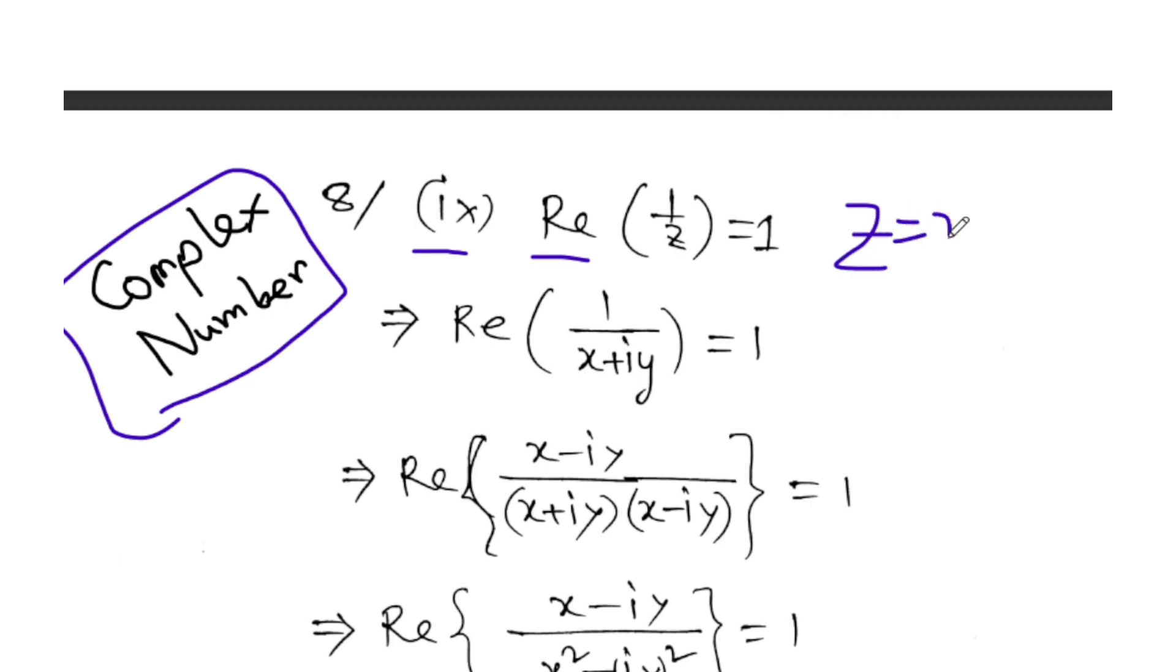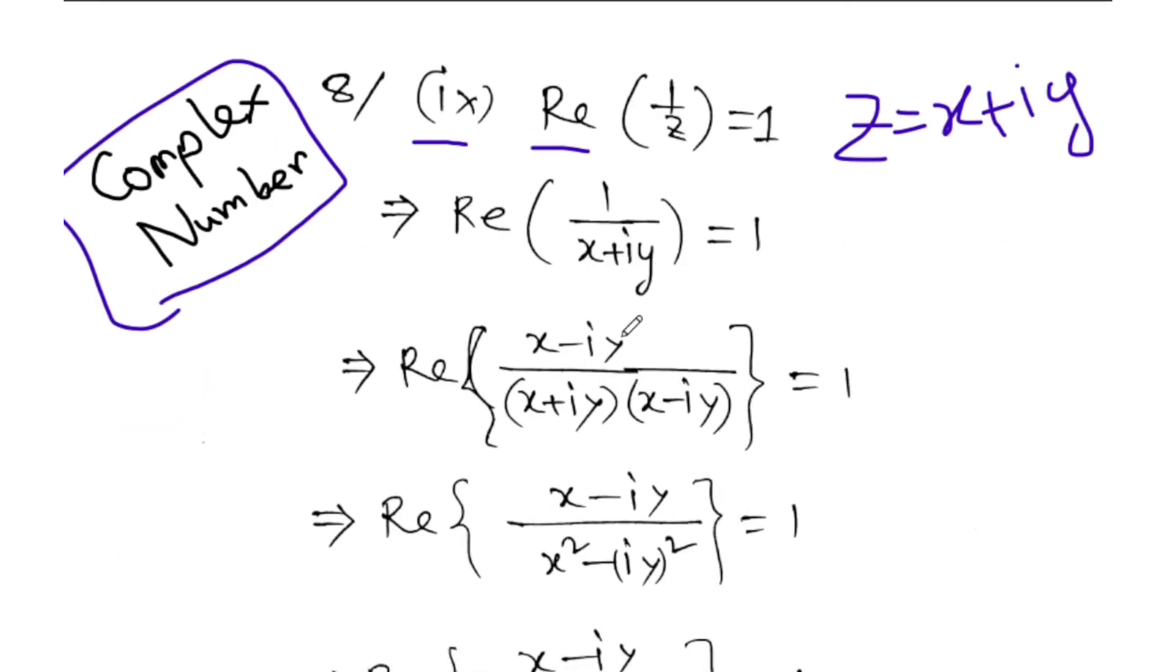Z is X plus iY, okay? X is the real part and Y is the imaginary part. To find one by Z, I'll multiply by the conjugate: X minus iY over X minus iY.